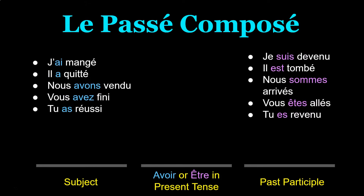So here we have the formula for forming le passé composé. You take your subject, conjugate avoir or être in the present tense, then conjugate your main verb into its past participle. What you're probably asking yourself is: how do I know when to use avoir and when to use être?